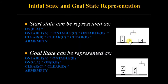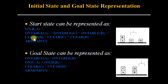We can represent our initial state using STRIPS language as follows: On(B,A) — B is on A; On-table(A) — A is on the table; On-table(C) — C is on the table; On-table(D) — D is on the table; Clear(B) — nothing is above B; Clear(C) — nothing is above C; Clear(D) — nothing is above D; Arm-empty — the robot arm is empty.